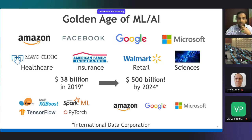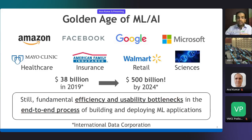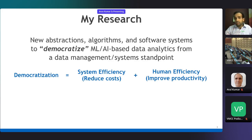However, as I will talk about today, despite all of these advances, there still remain numerous fundamental bottlenecks in the end-to-end process of building and deploying machine learning and AI-powered data analytics applications. These are bottlenecks of both efficiency and usability, and that's what I study fundamentally in my work. I build abstractions, algorithms, and software systems that democratize ML and AI by mitigating these bottlenecks from the data management and systems standpoint.